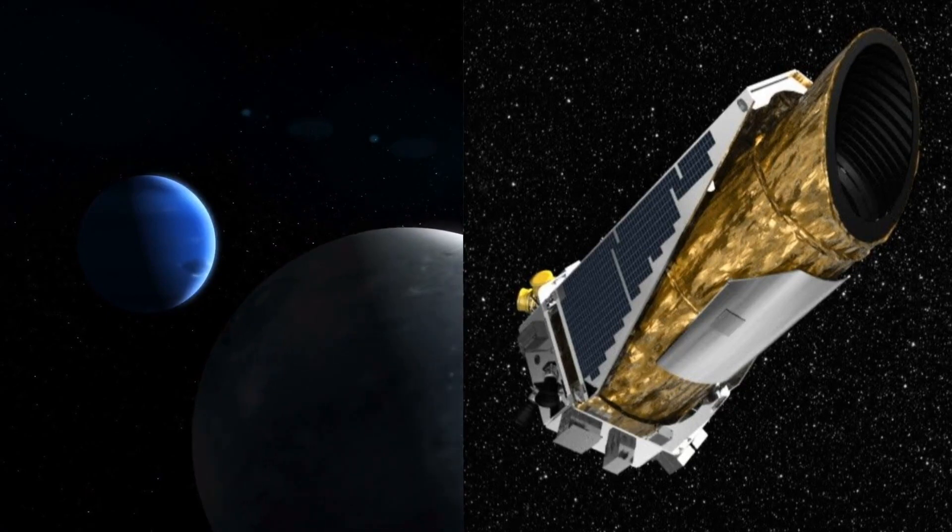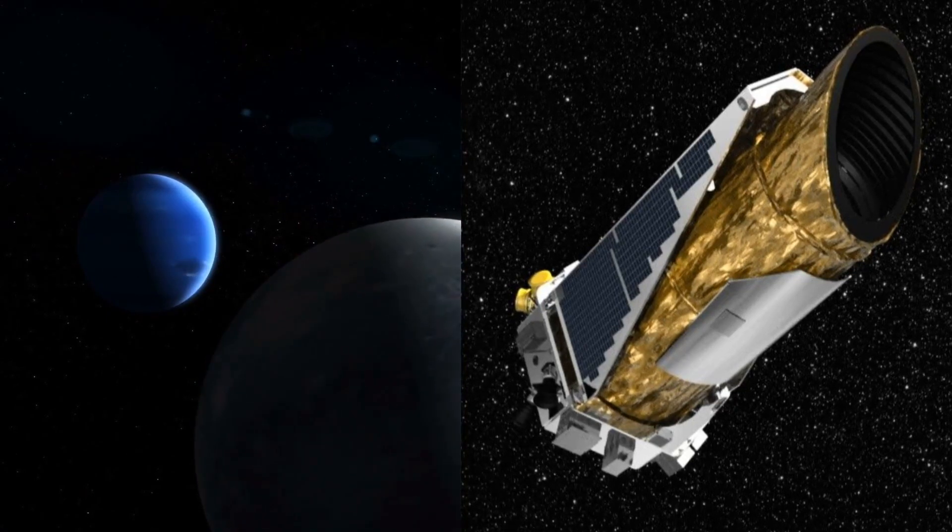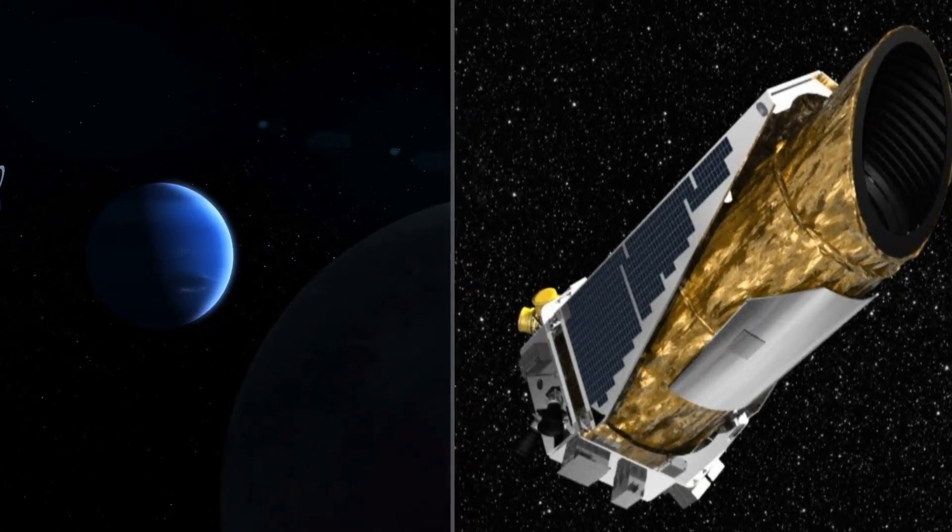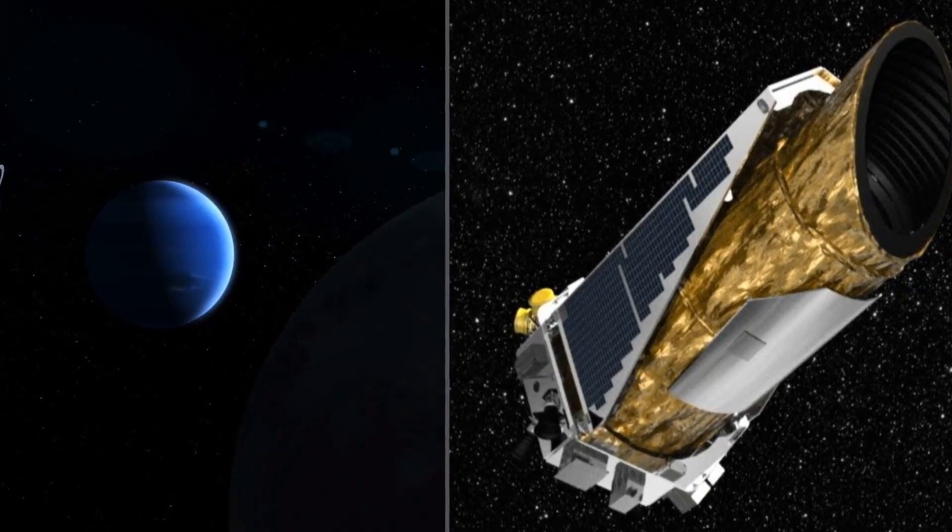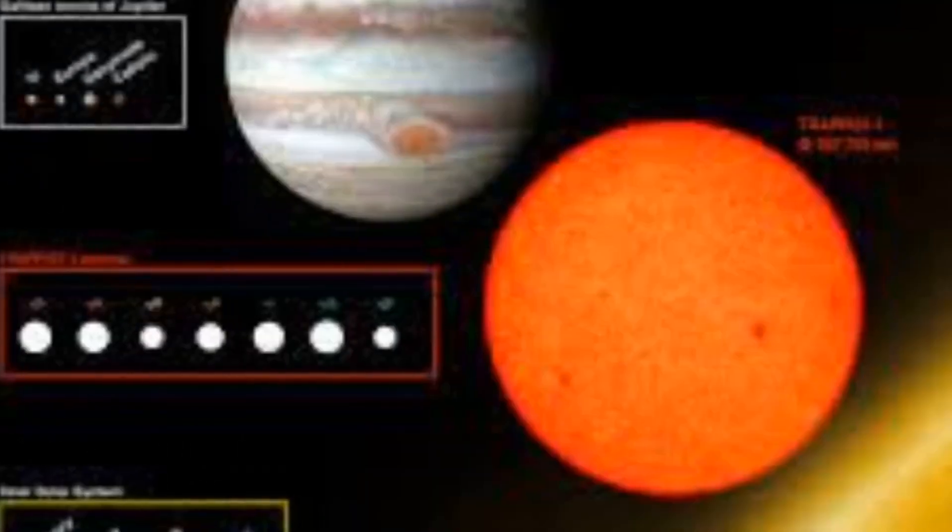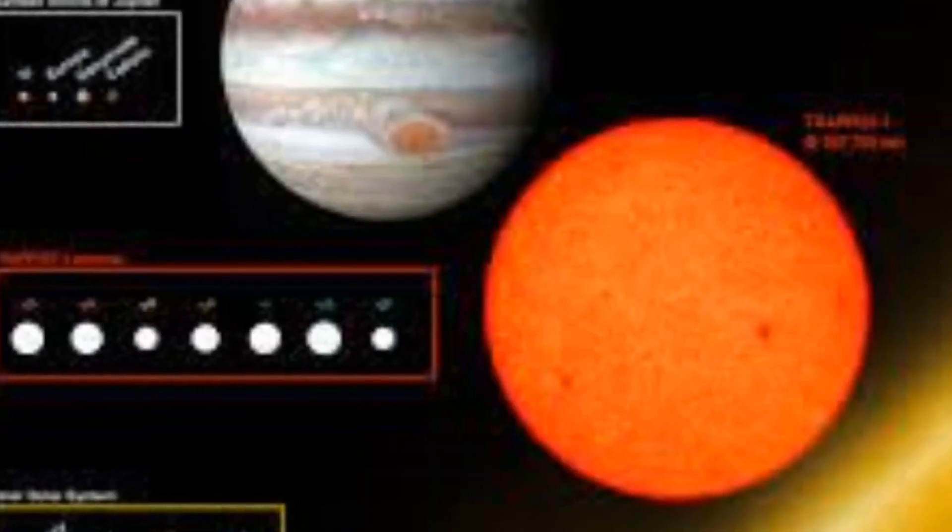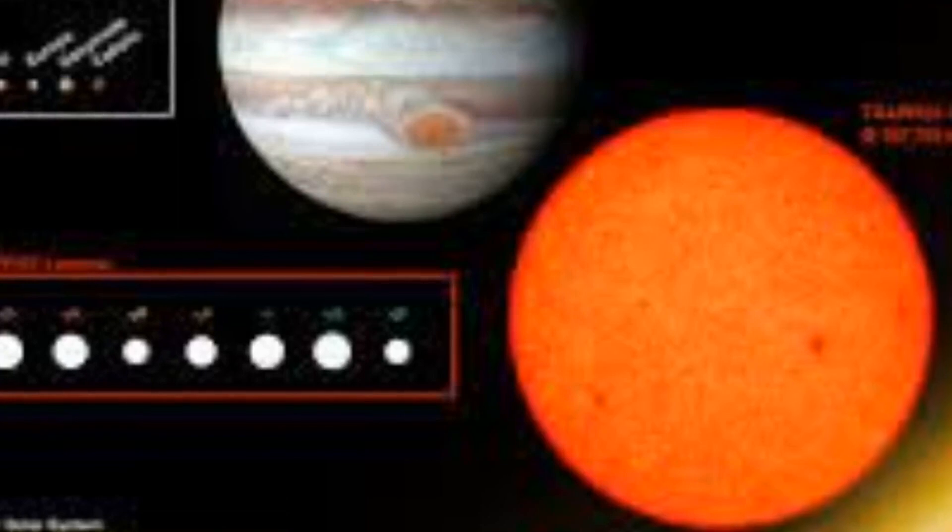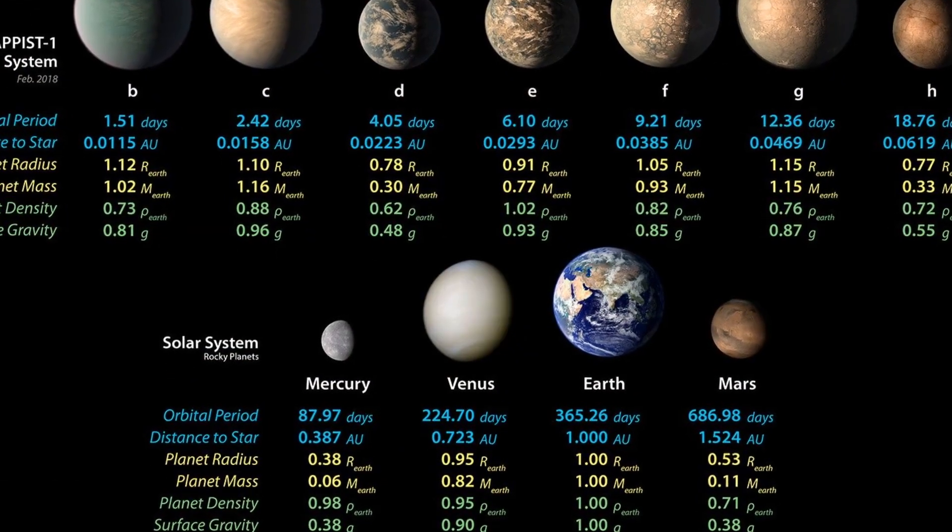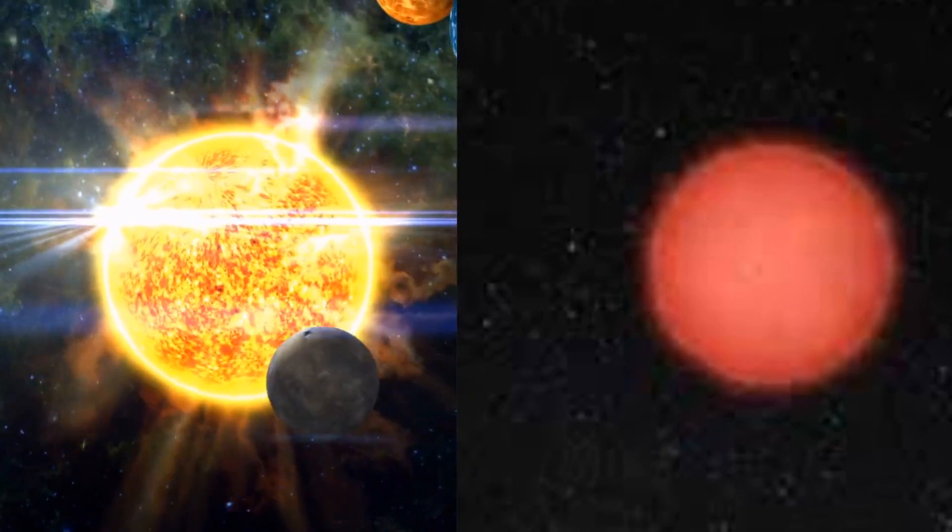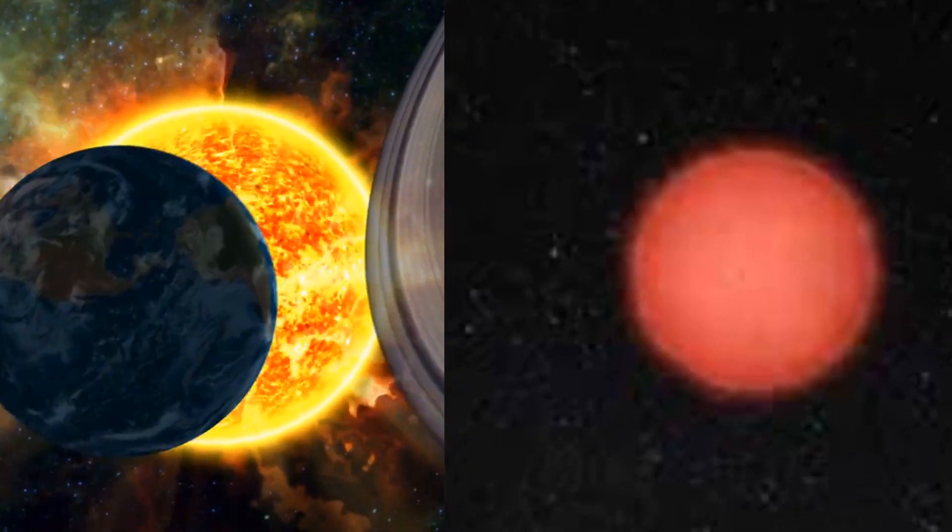Perhaps one of the most groundbreaking revelations stemming from the Kepler mission is the realization that over one-third of stars akin to our Sun could potentially host Earth-sized planets within their habitable zones—regions where conditions may be conducive to liquid water and, by extension, life as we know it. Among the fascinating exoplanetary systems brought to light is TRAPPIST-1, a star renowned for its extraordinary planetary entourage. This stellar system boasts a remarkable count of seven rocky exoplanets, each with its own distinct characteristics. The diversity within the TRAPPIST-1 system serves as a testament to the myriad possibilities inherent in planetary formation, challenging our preconceptions and expanding our understanding of the cosmic tapestry.